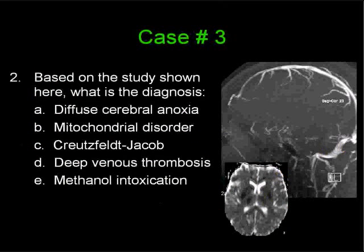Let's go on to question number two. In the inferior aspect of the screen I'll show you the same ADC map as before, but also an additional image — an MR venogram. The question is: based on the study shown here, what is the diagnosis? A, diffuse cerebral anoxia. B, a mitochondrial disorder. C, Creutzfeldt-Jakob. D, deep venous thrombosis. And E, methanol intoxication. Which is the diagnosis?